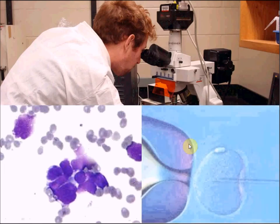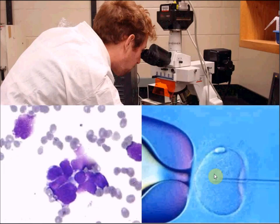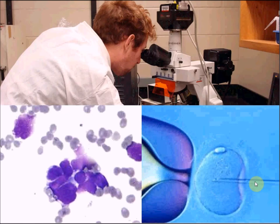Microscopes can also be used for fertility treatments. This is actually a human egg, which is one cell, and the scientist is injecting a single sperm — you can just see the head of the sperm there going into the egg. They wouldn't be able to do this without a microscope because it's so small.